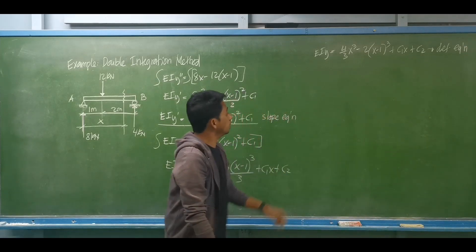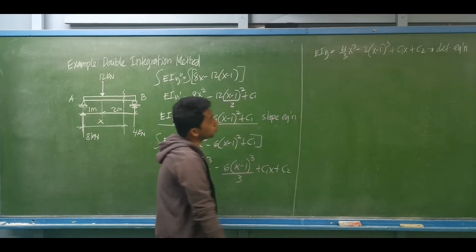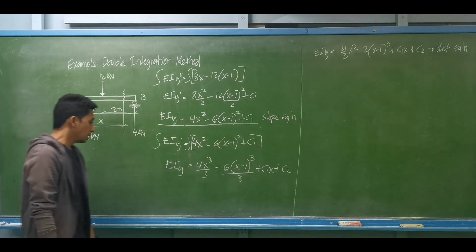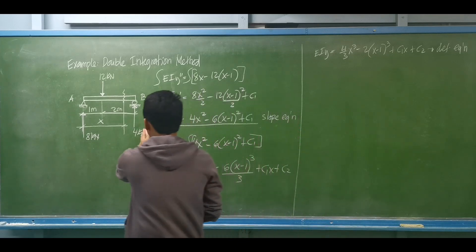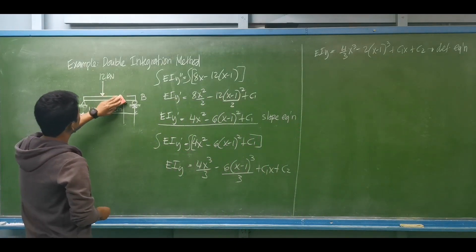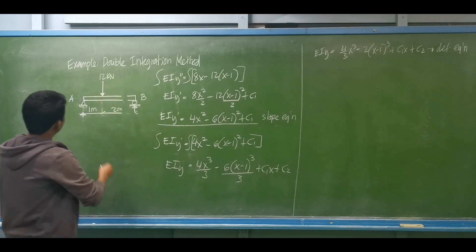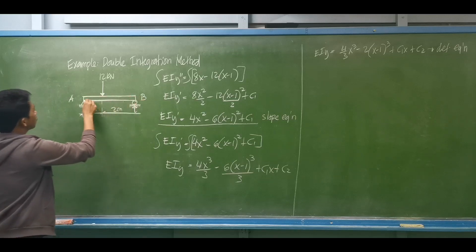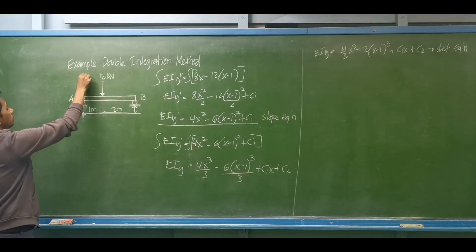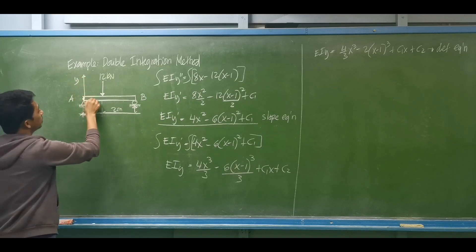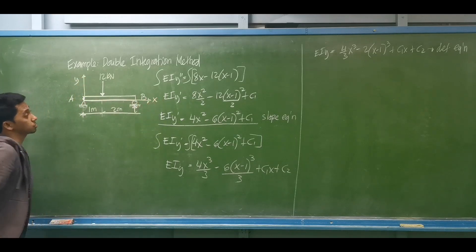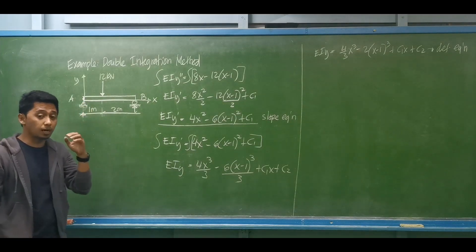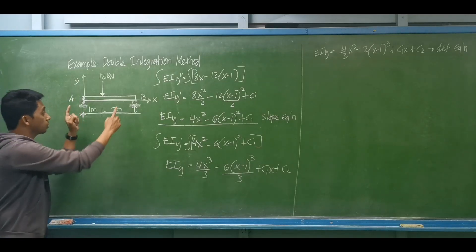So we have the slope equation and the deflection equation. To determine the arbitrary constants, we go back to our beam. We assume that A is the origin, so the vertical axis is Y and the horizontal axis is X. At supports where there is no settlement, the deflection should be equal to 0.